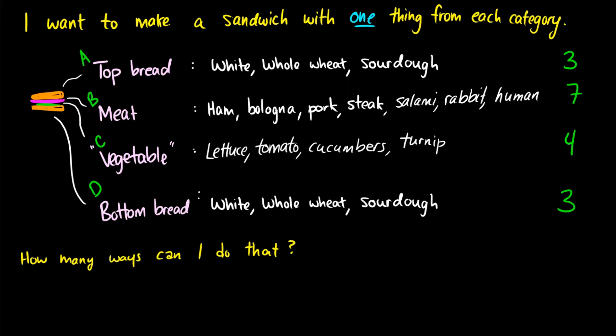Now when we're doing subsequent tasks, we need to multiply. So there's three ways to do task A, seven ways to do task B, four ways to do task C, and three ways to do task D. In other words, in total, there's going to be 21 times 12 different ways, which should be something like 210 plus 42, which is 252 ways in total. So there's 252 different sandwiches we can make.